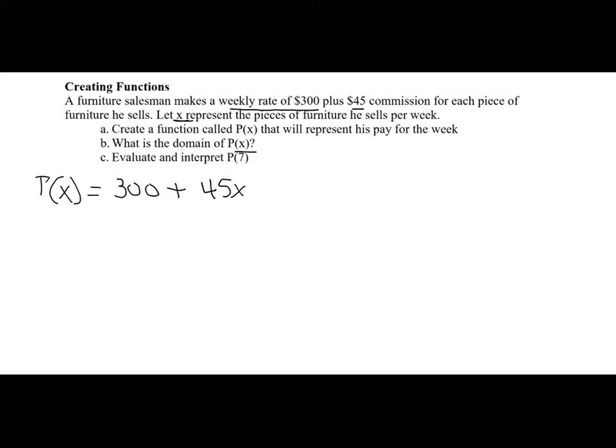Now they want to know the domain of P of X — what X values can we use? X represents pieces of furniture sold per week. I'm never going to sell negative five pieces of furniture or two and a half pieces. I'll sell zero, one, two, three, four pieces. So the domain here would best be whole numbers, since we don't want negatives and we won't sell half a piece of furniture.